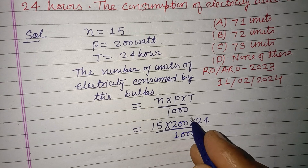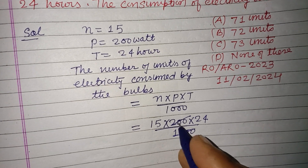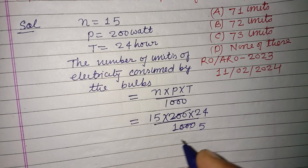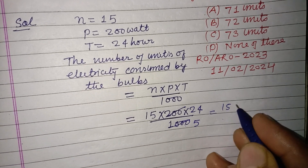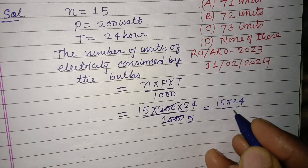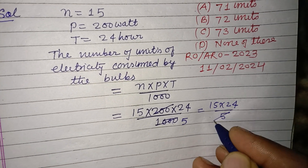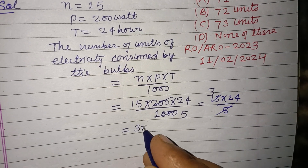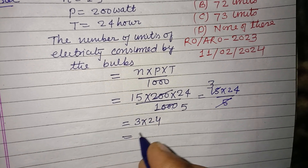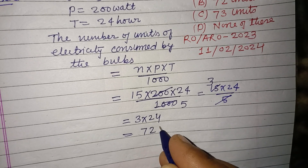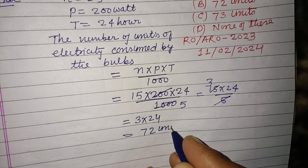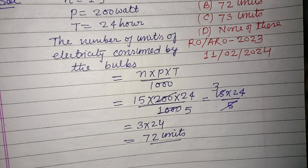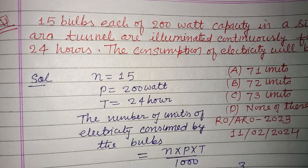So, we divide 1000 by 200 to get 5, giving us 15 × 24 / 5. Since 5 × 3 = 15, this becomes 3 × 24, which equals 72 units — the electricity consumed by the bulbs.